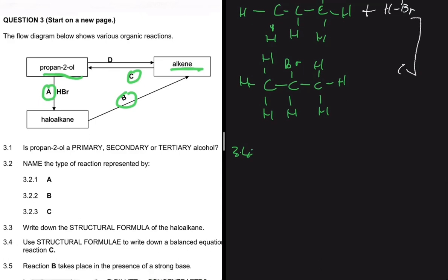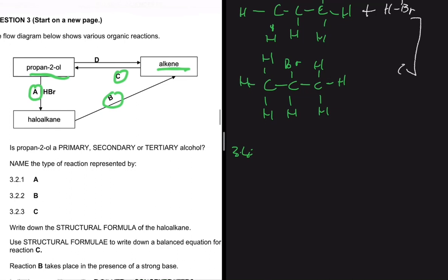And then now off to 3.4. 3.4 is saying let's use structural formula to write down a balanced equation for reaction C. So reaction C, we have the alkene turning to an alcohol. We already know that that is going to be an addition reaction.